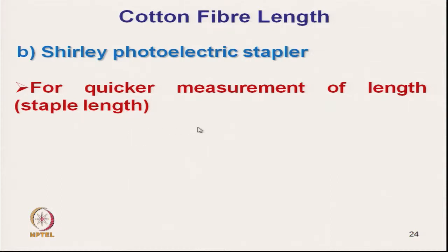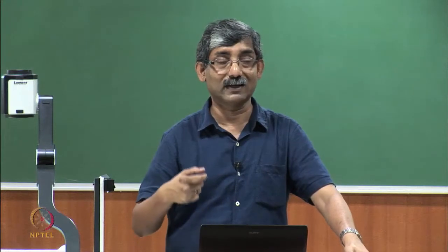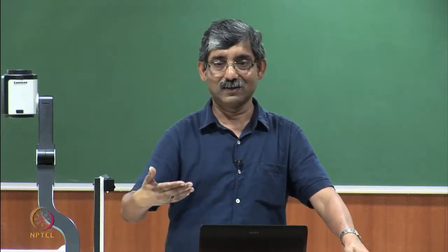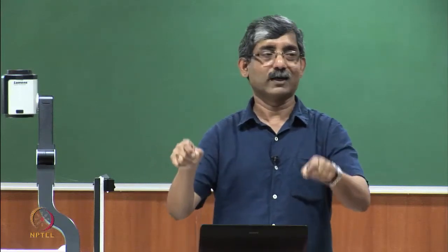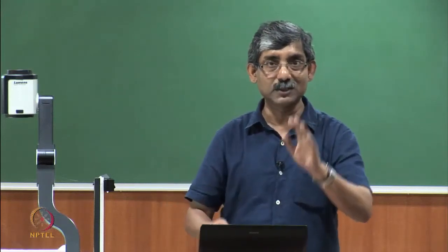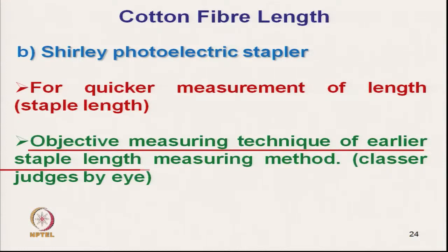The photoelectric stapler is an objective measuring technique — it is a quicker, mechanized version of the earlier hand stapling method. In the earlier method, the classer made the judgment by eye; here it is done by photoelectric sensing. There is no subjectivity; it is an objective technique.